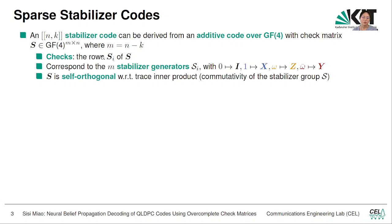We call every row S_i of S a check of the code. Each S_i corresponds to a stabilizer generator S_i, which can be used to produce a syndrome for us. For example, we can use this mapping from GF(4) elements to the Pauli operators. To make sure that the stabilizer code is indeed a valid code, we need to make sure that S is self-orthogonal with respect to the trace inner product, or the symplectic inner product. This corresponds to the commutativity of the stabilizer group.